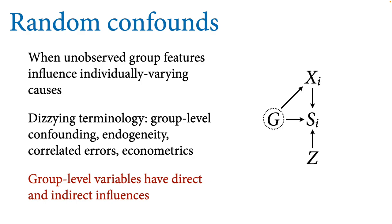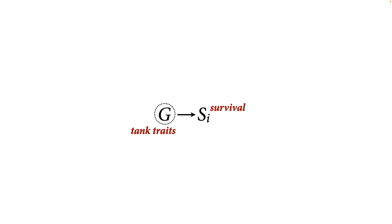This literature is very confusing — every field and even every subfield uses different terminologies and seems to have different modeling preferences. Things are called group-level confounding, endogeneity, correlated errors. Econometrics uses yet different terminology. The basic issue is that group-level variables can have direct and indirect influences, and we need to think about that when drawing our generative models. Think about the tadpoles: unobserved features of the tank will affect survival, and they may also affect the treatment. We also have measured features of the group or tank — let's call them Z — things that every tadpole in the tank experiences, group-level or group-trait variables. Then there are individual-level things X we measure about each tadpole, and we're interested in the causal effects of those individual-level traits on survival.